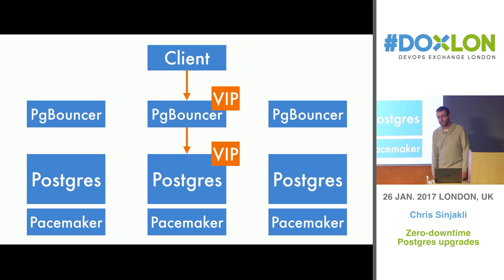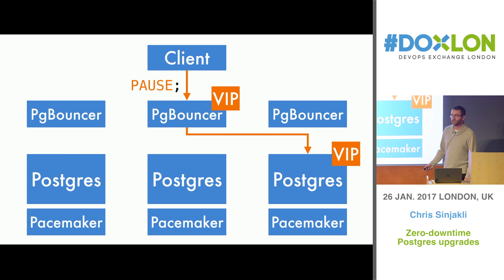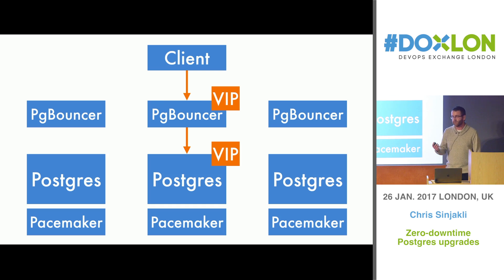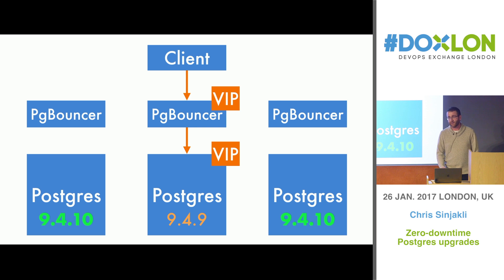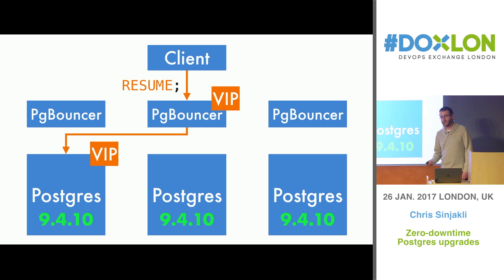So how do we use that for upgrades? If we pause, then we can move the VIP that points to Postgres around as much as we like, and the clients have absolutely no idea because every query is held right at the top. For upgrades, let's say we've got the last remaining node on version 9.4.9 and it's the current primary. We pause our queries, migrate to one of the other nodes, resume queries, and finally upgrade the last node.